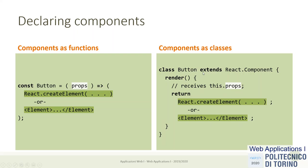Instead, you can define a component as a class. In this case, the class extends React.Component and must have a render method that returns the same value that the function would return. So actually they are equivalent — the definition of a component as a function is the same as a class, because the value returned by render is the same as the value returned by the functional expression.